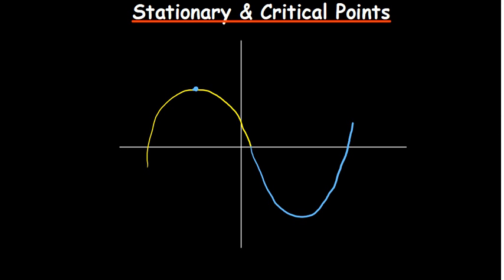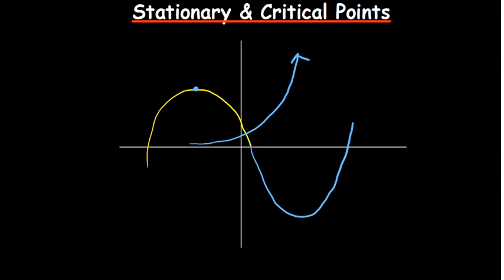There's what we call increasing at a reducing rate. This part is increasing at a decreasing rate because we are reaching a maximum. Then this part is increasing at an increasing rate. A basic example: an exponential function increases at an increasing rate, while a natural log increases at a decreasing rate.